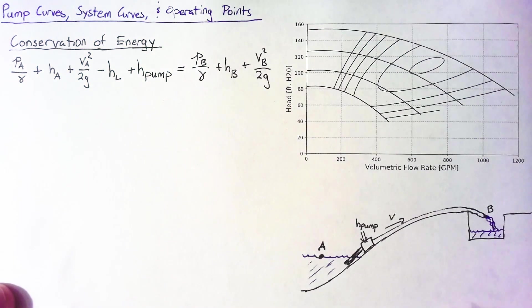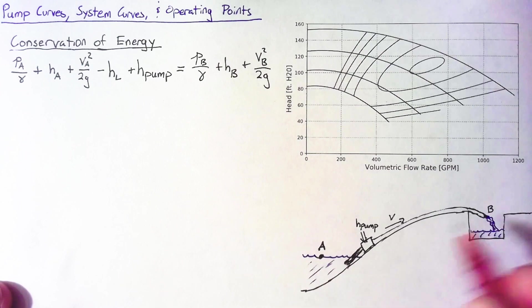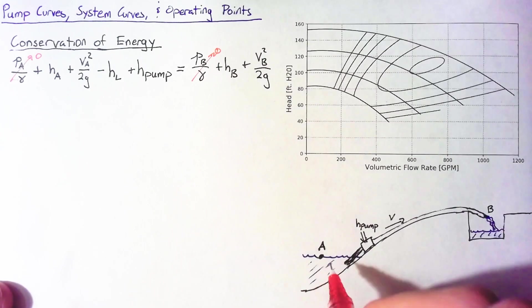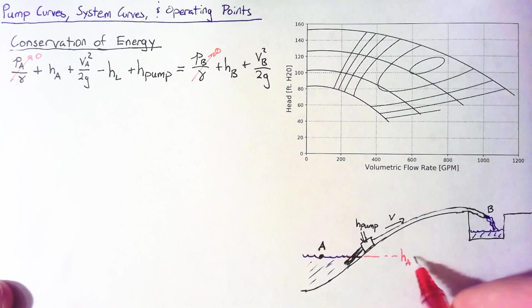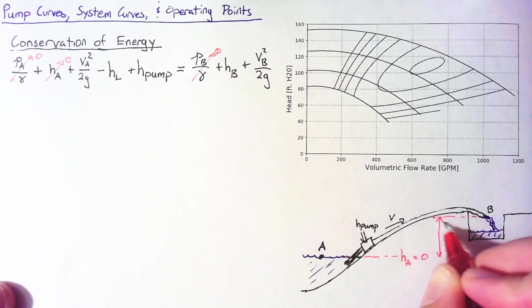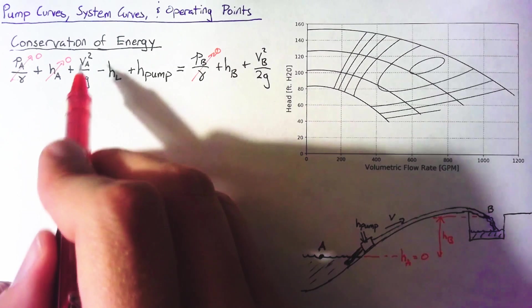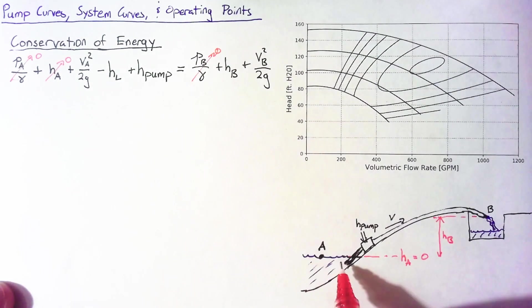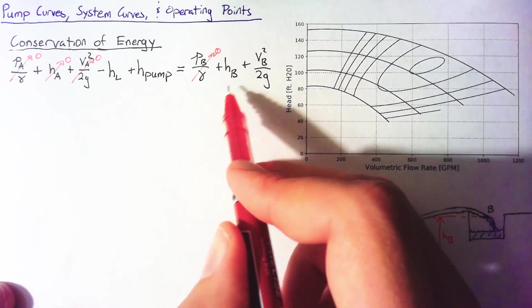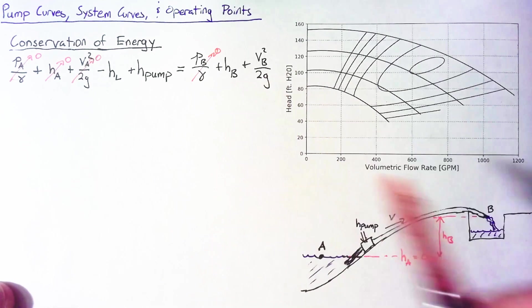So the first step here, as always, is to just recognize the things that we can get rid of. Both at point A and point B, we're going to be exposed to atmosphere, so we can get rid of both of those values. We can also choose to set the height at A equal to zero to make this value go away. Our velocity at A, because A is on the surface of our little lake or pond here, is also going to be zero. The height at B we know, and we don't know the velocity at B.